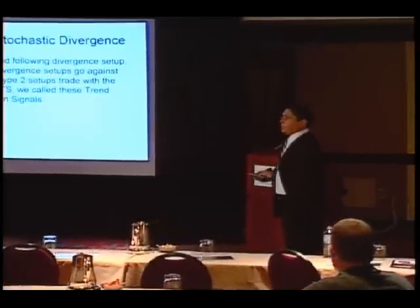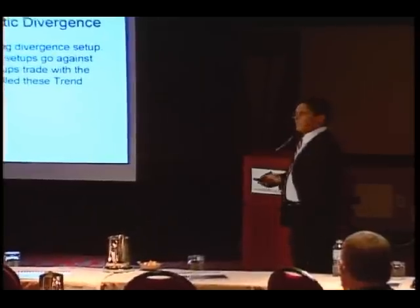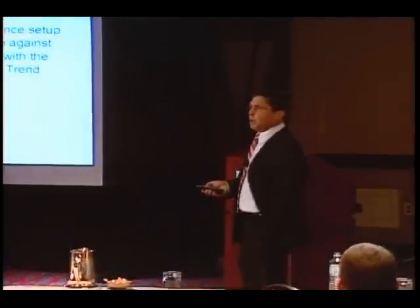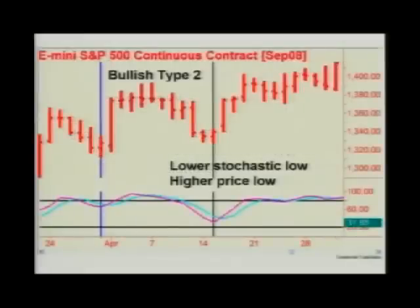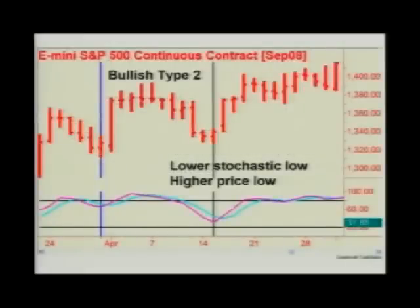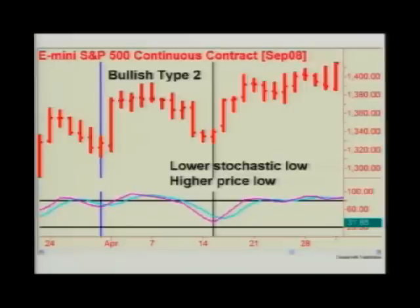Moving on to another type of divergence — this is a trend-following divergence. Some of you may have heard of Larry Williams. Larry Williams credits my old boss at CTS, a young man named Nick Van Nuys, with identifying this type 2 stochastic divergence. We called this a CTS trend confirmation signal. In this case, we have a stochastic swing low and a price low, then a higher price low — however, a lower stochastic low — and we get the buy signal when the faster K line crosses over the D line.